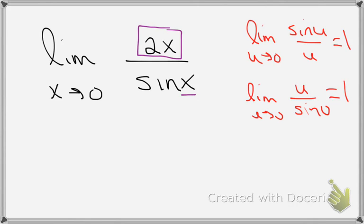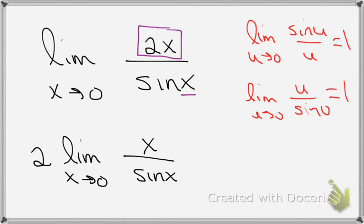But we can algebraically separate that. So I could pull that 2 out front because all constants come out front if I like. And then I could rewrite this so that it is the limit as x goes to 0 of x divided by sine x, which is now a perfect match to this part of the theorem here. So this is equal to the 2 that's in front.